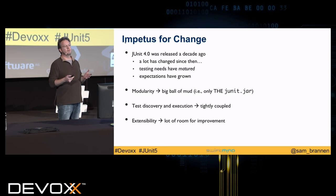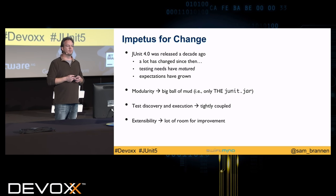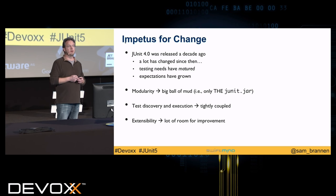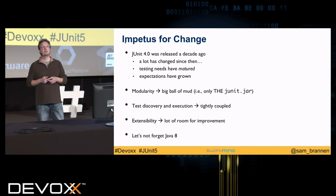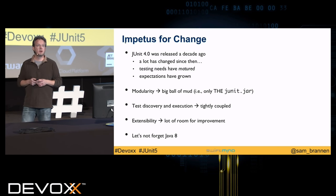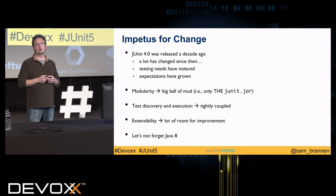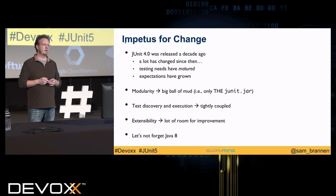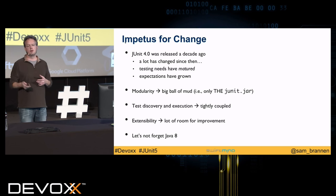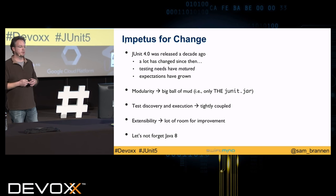Extensibility — there's a lot of room for improvement in JUnit 4. That's what we hope we've done well in JUnit 5. And last but not least, let's not forget Java 8. JUnit 4 is still building on Java 5, which has been EOL'd for quite a long time, meaning it's not even able to make use of things like streams or lambda expressions.